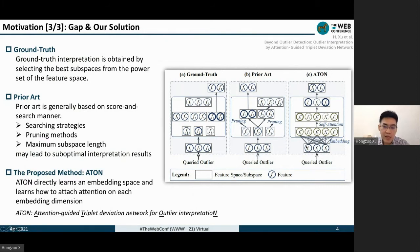The mainstream of existing methods is based on score and search manner, and they have to employ searching strategies, pruning methods, and set a maximum subspace length to handle this tremendous searching space.